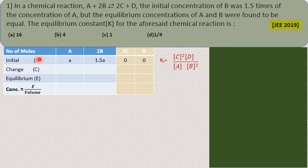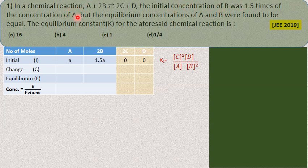The simplest method is the ICE method: I for initial concentration at time zero, C for the change that happens at equilibrium, and I minus C gives the number of moles at equilibrium. Concentration equals number of moles at equilibrium divided by the volume of the container. From the volume, you can calculate the molar concentrations of materials at equilibrium and then calculate Kc.